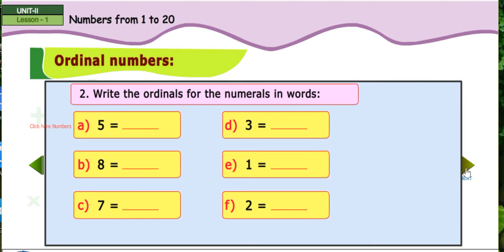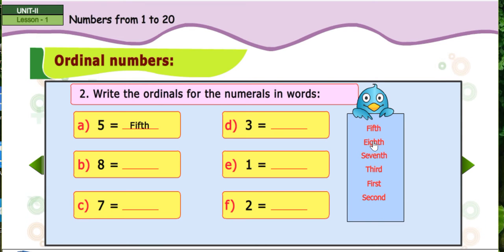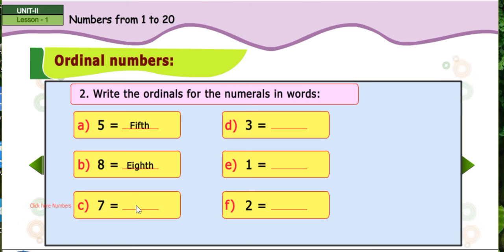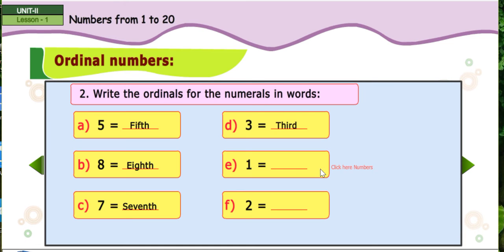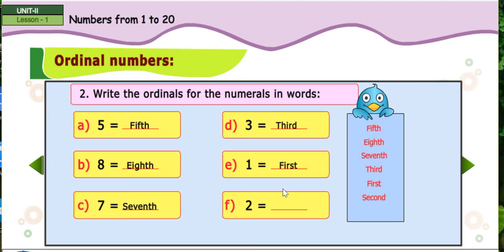Write the ordinance for the numerals in words. Fifth. Eight. Seventh. Toro. First. Second.